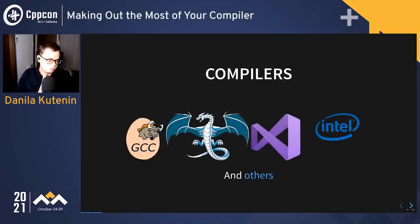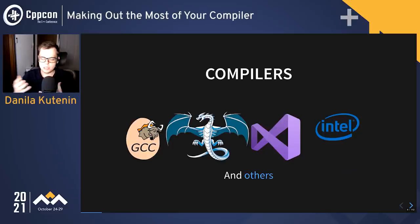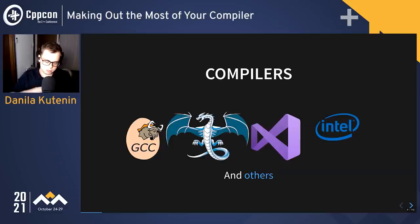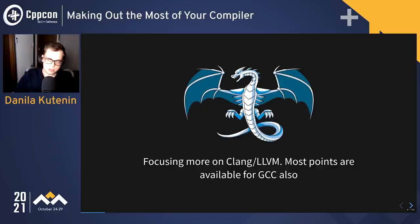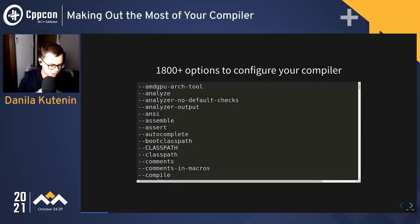We all know our beloved compilers. I believe the compiler market is not very big — maybe dozens exist. The most popular are GCC, LLVM, MSVC, and Intel, with others like IBM's compiler. I'm going to focus on the most popular ones, more on LLVM and Clang. Most points will also be available for GCC and some for MSVC. LLVM has around 1800 options to configure, which blew my mind when I tried to dump all of them — you can customize your compiler as much as you want.